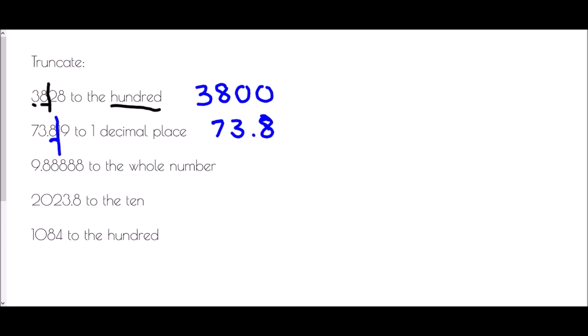In the next one we are truncating 9.88888 to the whole number. The whole number is the 9, so we're cutting off after the digit for the 9 units and we just write down 9. Then we have 2023.8 being truncated to the tens. We need to identify where the tens are — we've got thousands, hundreds, tens — that is the 2. We cut it off after that point, so we write down the three original digits 202, but the units becomes a zero, giving us 2020.